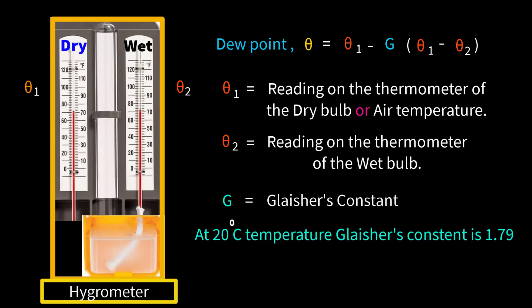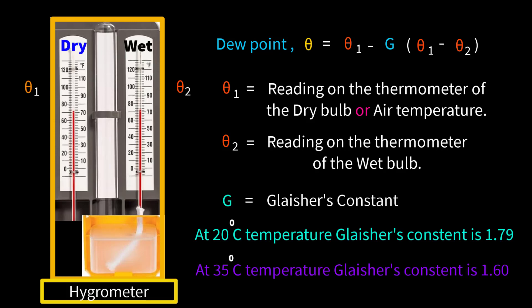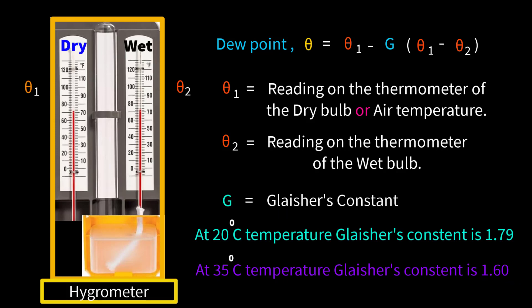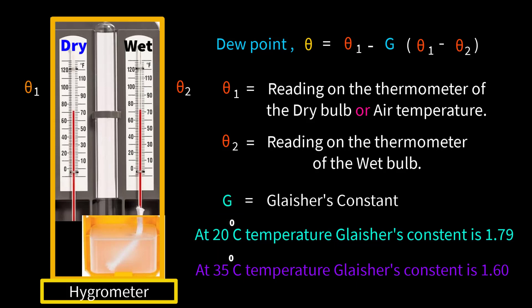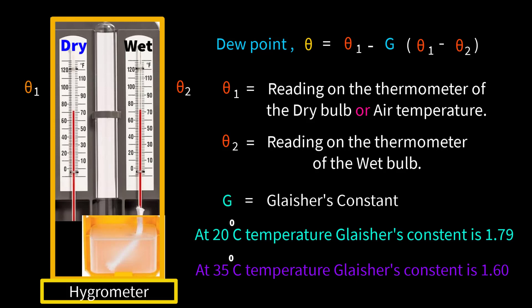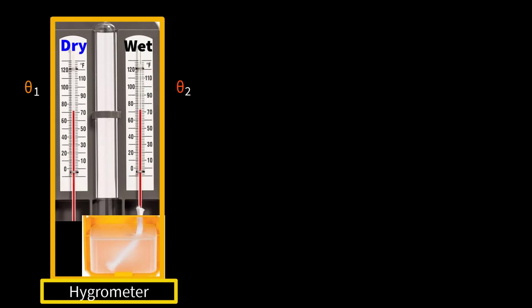For example, at 20°C the Glacier's constant is 1.79, and at 35°C it is 1.60. You need not memorize these constants as they will be given in the problem. If different Glacier's constants for different temperatures are mentioned in the problem, remember to take the constant corresponding to the air temperature or the dry bulb thermometer reading as the value of G.